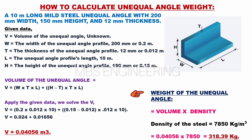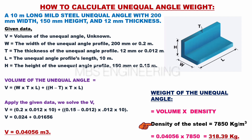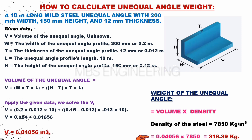Next, we learn about how to calculate the weight of mild steel unequal angle materials. Volume is multiplied by density. The density of mild steel is 7,850 kilograms per cubic meter. So: 0.04056 multiplied by 7,850 equals 318.39 kilograms. Therefore, the weight of the mild steel unequal angle is 318.39 kilograms.